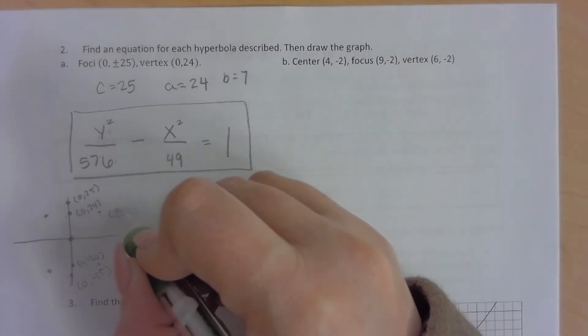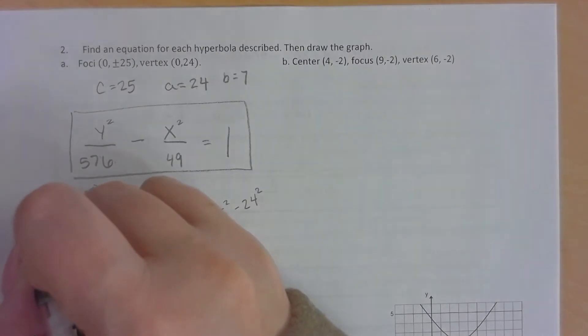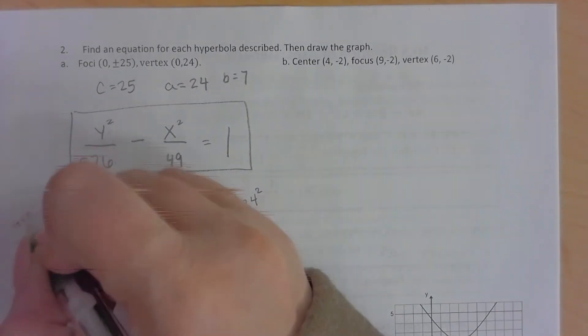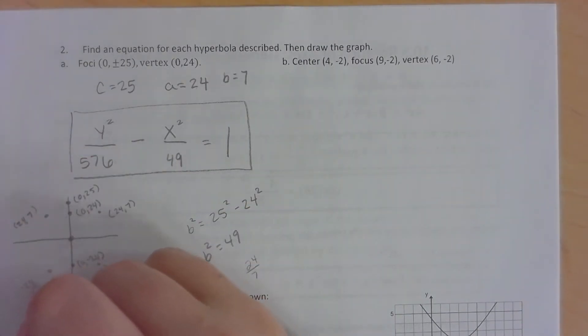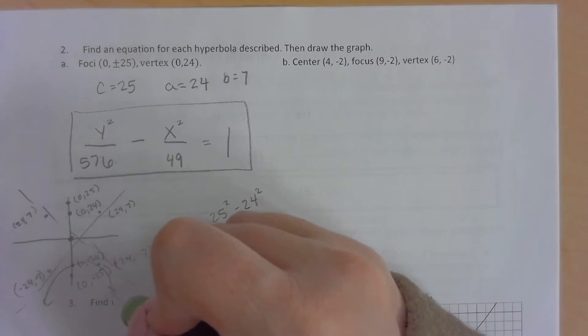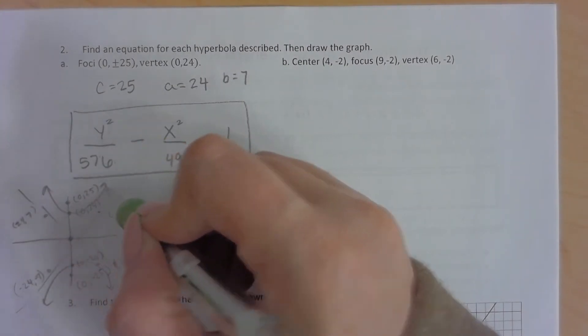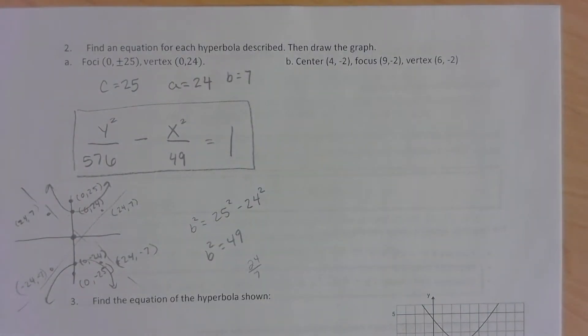So these ordered pairs here would be 24 comma 7, negative 24 comma 7, negative 24 comma negative 7, and then positive 24 comma negative 7. So here we go. Now we have our hyperbola.